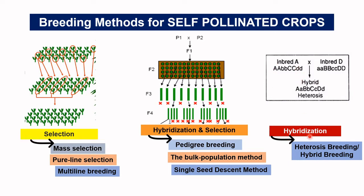The third category is hybridization, also known as heterosis breeding. In this case a cross between two parents — say A and B — produces a heterotic F1, and the goal of this breeding program is to produce F1 hybrids rather than to produce a homozygous line from the F1.